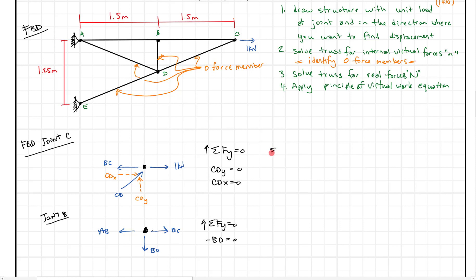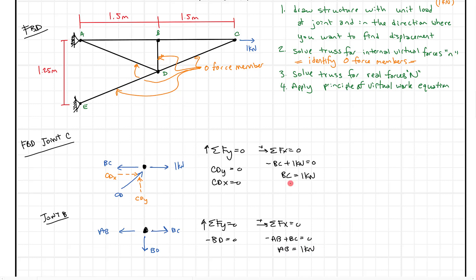That's a pretty important finding because it means when we come back, all we need to solve for is BC and AB. Summing forces in the X direction at joint C: minus BC plus one kilonewton equals zero, so BC equals one kilonewton. Likewise at joint B, minus AB plus BC equals zero, so AB equals one kilonewton. So we have our little n values: AB equals one and BC equals one kilonewton.